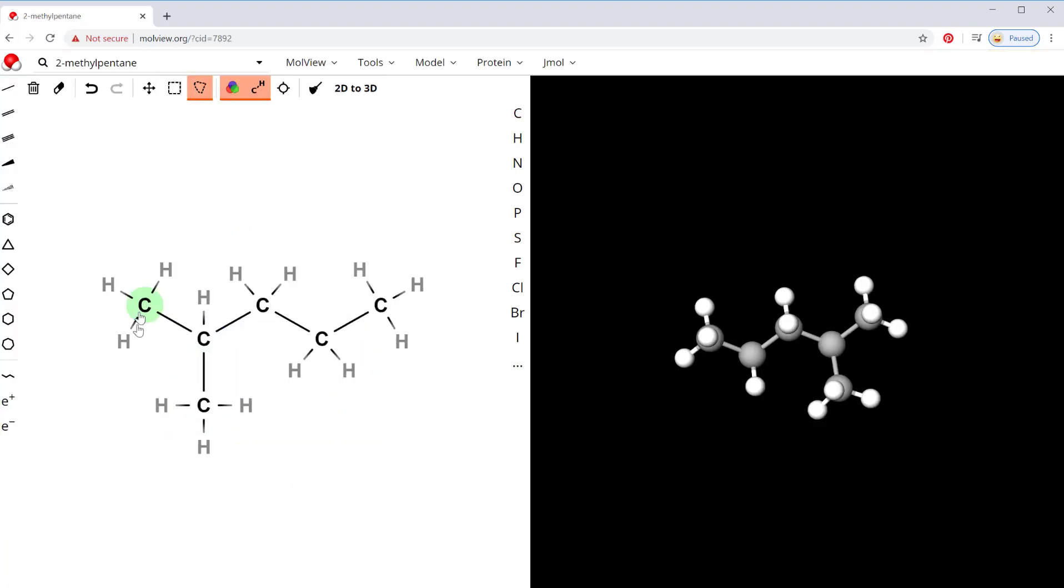This is a simpler molecule, so it gives you the expanded structure. If I hold down the left button on my mouse, I can rotate this and look at what that structure would look like if I built it.